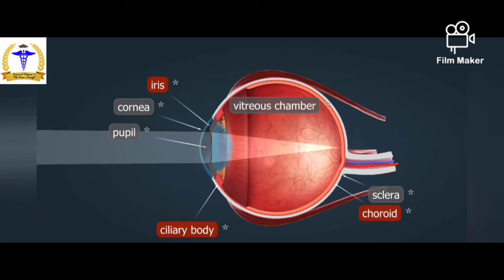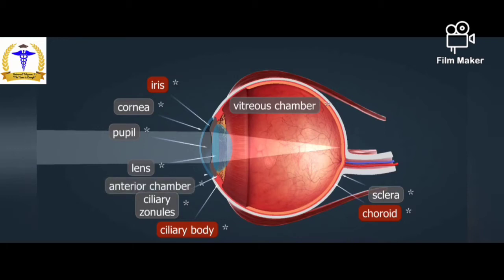The muscles of the ciliary body ensure the accommodation of the eye lens to the distance of the object viewed by changing its curvature. The lens is connected to the ciliary body through the ciliary zonules. The ciliary body is also responsible for producing the aqueous humor, the liquid that fills the anterior chamber. If the drainage of the aqueous humor is insufficient, the pressure increases in the eye, which causes glaucoma; in serious cases it may lead to blindness.